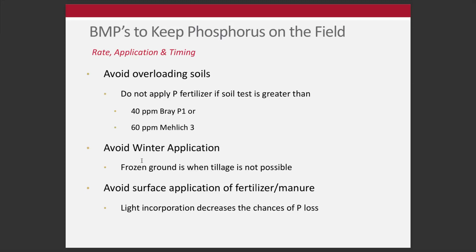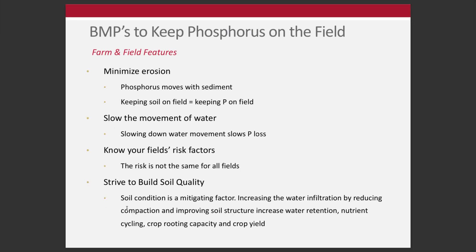Avoid winter application — don't apply fertilizer or manure when the ground is frozen. As of a few years ago, this is actually illegal in the state of Ohio. Also avoid surface application of manure or fertilizer without incorporation. Even a very light incorporation increases contact with the soil and decreases the chance of phosphorus loss. These are all important considerations for keeping the phosphorus we apply on the field.